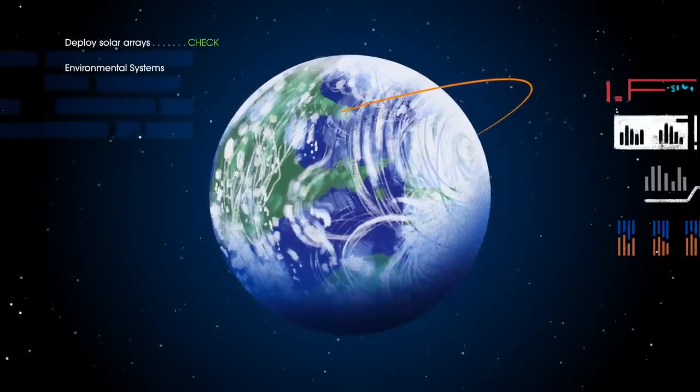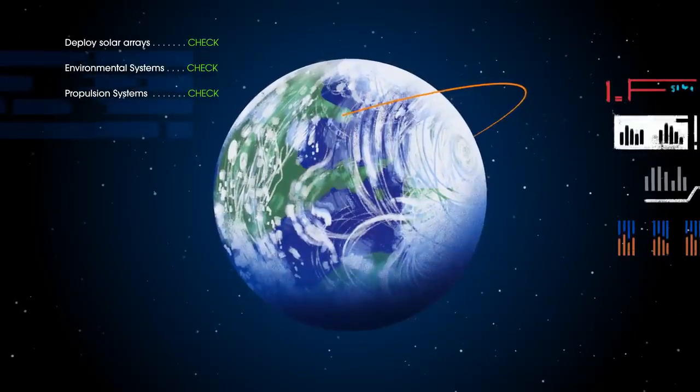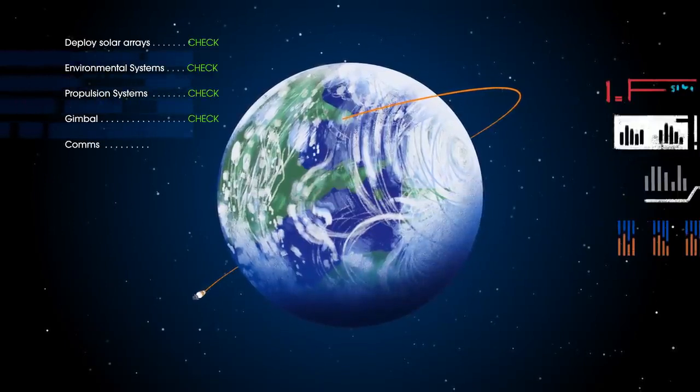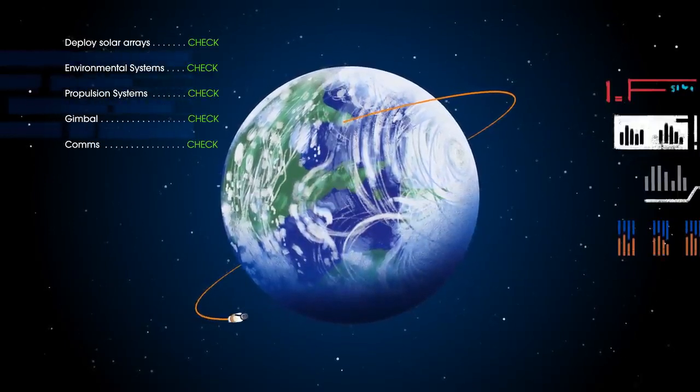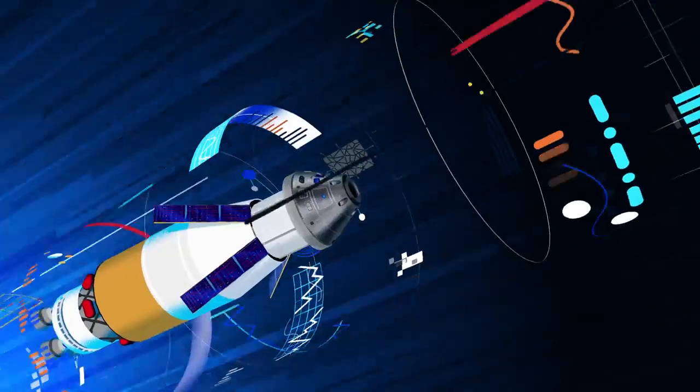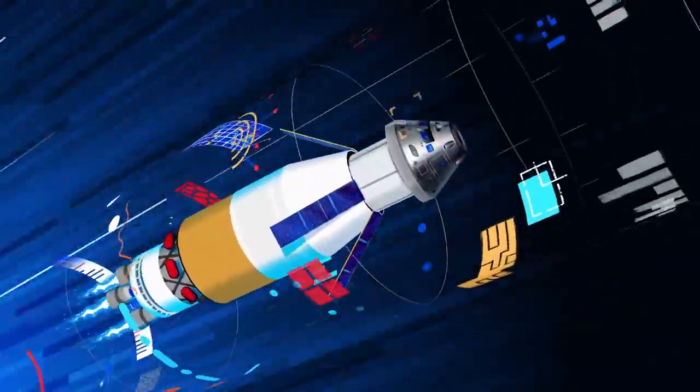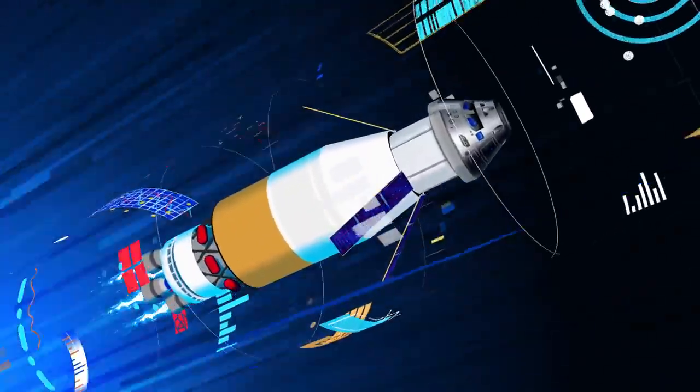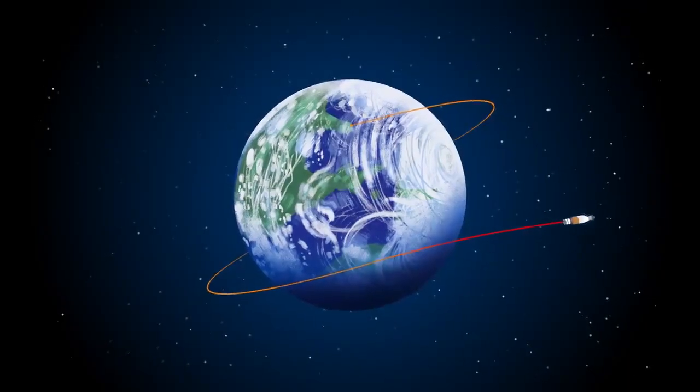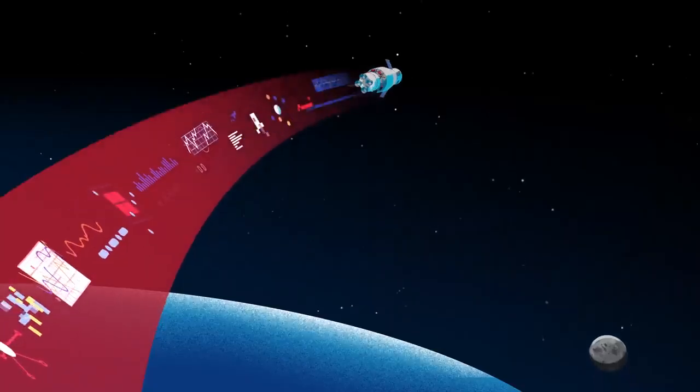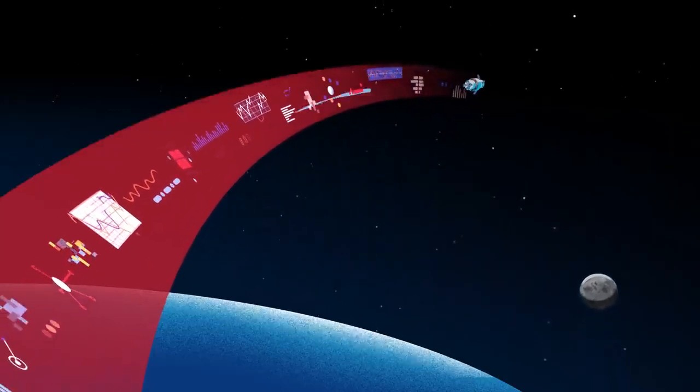Here, the crew reconfigure the spacecraft and check systems to confirm everything is ready for deep space travel. With a go from mission control, the crew reignite the exploration upper stage engines to leave Earth entirely. The exact timing of this maneuver is critical to reach a speed that can escape Earth's gravitational pull, but also put Orion on a course that will intersect the Moon days later.